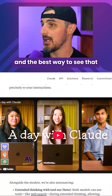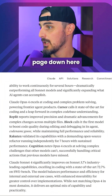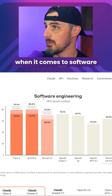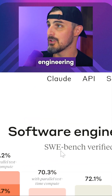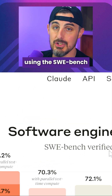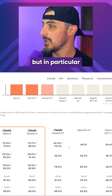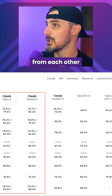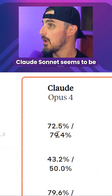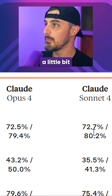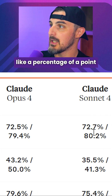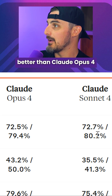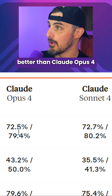The best way to see that is from the announcement page — they have some charts, including accuracy for software engineering using the SWE bench. In particular, this table shows how the two differentiate. Claude Sonnet 4 seems to be very slightly better than Claude Opus 4 — sometimes by just 0.2% of a point.